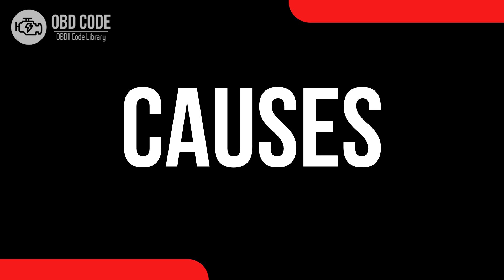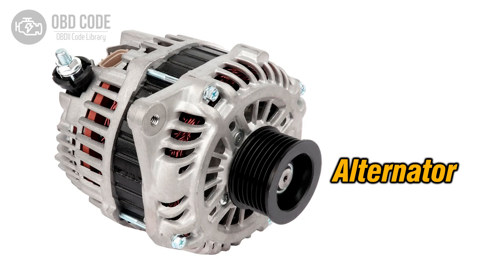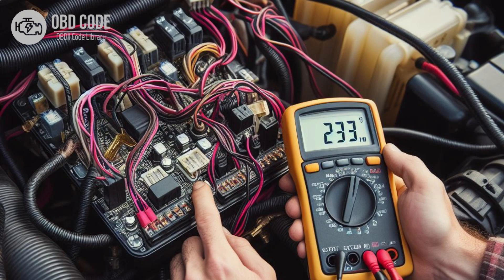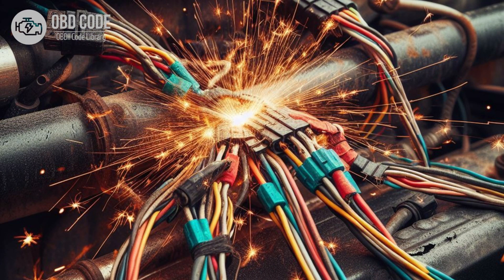Causes of the code P0620: 1. Faulty generator or alternator. 2. Defective voltage regulator. 3. Wiring issues, such as short circuits or open circuits, in the generator control circuit.